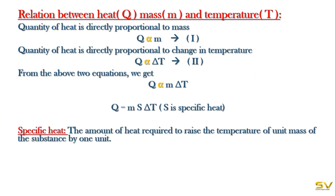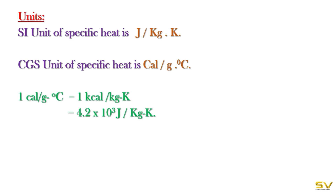Specific heat s is defined as the amount of heat required to raise the temperature of unit mass of a substance by one unit. From this, s = Q / (mΔT), where Q is the quantity of heat, m is mass, and ΔT is the change in temperature. The SI unit of specific heat is joule per kilogram kelvin, and the CGS unit is calorie per gram degree Celsius.